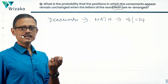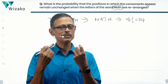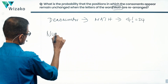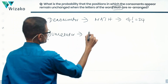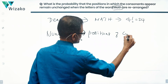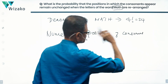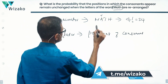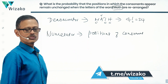To compute the probability, now we need the numerator. The numerator talks about the number of favorable cases — favorable cases where the positions of the consonants remain unchanged. In the word MATH, A is the only vowel we see, so the remaining letters — M, T, H — are all consonants.